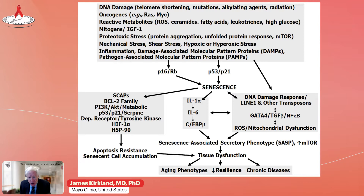Senescence is a cell fate like replication, differentiation, or apoptosis. But unlike other cell fates, it can take a week to six weeks for senescent cells to appear, so it's a slowly developing cell fate. There are a variety of factors which can transduce a damage signal to the cell and activate programs related to senescence, but there are multiple different intracellular programs that can do this. What this means is that there's no single marker that's completely reliably sensitive and specific for senescent cells, and sometimes it's hard to say which cell is senescent and which isn't.